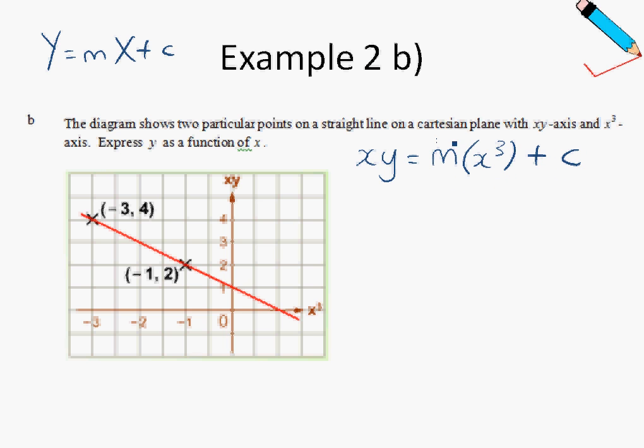So all we need to do now is to find the precise number for m and c. So m is gradient. So once again, how to find gradient? We'll just take the y-coordinate of one point minus the y-coordinate of the other point, the x-coordinate of one point minus the x-coordinate of the other point. I key this into the calculator, and I'll just get m is equals to negative 1.